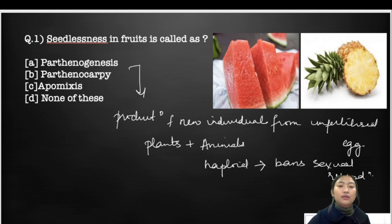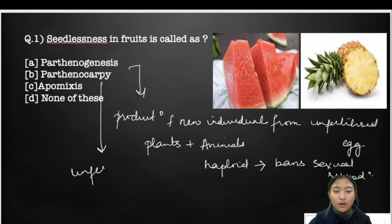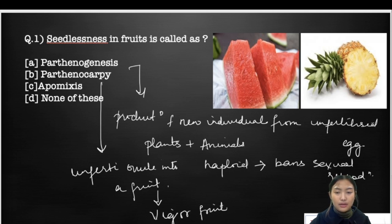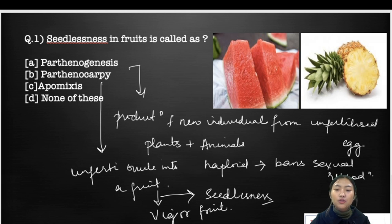Parthenocarpia is the development of an unfertilized ovule into a fruit. It usually results in a bigger fruit, and they have the condition called seedlessness — producing fruits without any seeds, as you can see in the case of this watermelon and pineapple.